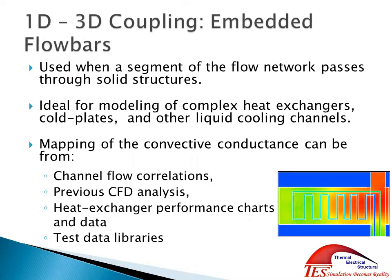Now we're going to talk in a little more depth about the actual embedding of 1D flow bars into the 3D. As you can see in this image, we have represented flow bars going through a cold plate in a full 3D model. The flow is handled completely on the 1D side, but it's picking up temperature through the 3D model, specified through either some kind of correlation, an H value from previous CFD analysis, or however you obtain that information. As the fluid comes in, it picks up temperature, adjusting how much heat it's pulling out of the 3D model. This is ideal for modeling any kind of liquid cooling channels, cold plates, or even complex heat exchangers in a 3D system.